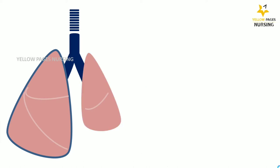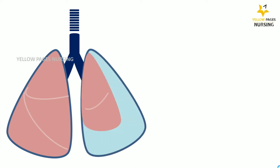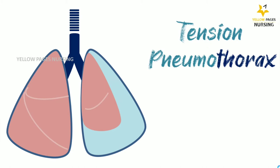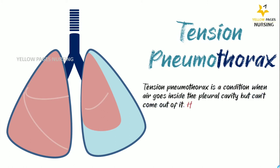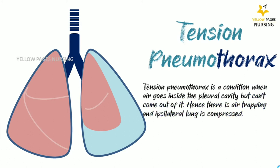Next is tension pneumothorax — a condition when air enters the pleural cavity but cannot come out, causing air trapping and compression of the ipsilateral lung. This can also happen when chest drains are clamped for a certain period of time.